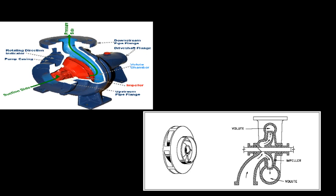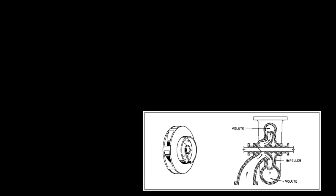Centrifugal pumps are often associated with the radial flow type; however, the term can describe all impeller-type rotodynamic pumps including radial, axial, and mixed flow variations. Radial, mixed, and axial flow pumps belong to the class of rotodynamic machines. In a radial flow pump, fluid entering along the axial plane is accelerated by the impeller and exits at right angles to the shaft. Radial flow pumps operate at higher pressures and lower flow rates than axial and mixed flow pumps.